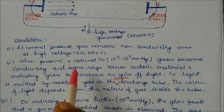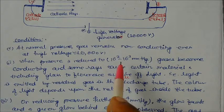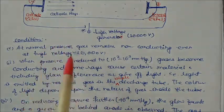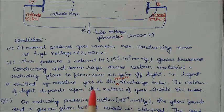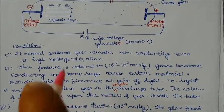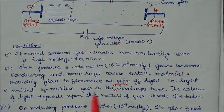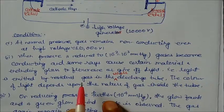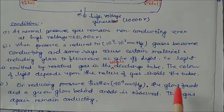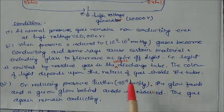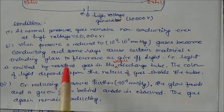Where pressure is reduced to this level, light is emitted by the residual gas present in the glass tube — called residual gas in the discharge tube. The whole discharge tube was glowing. The color of the light depends upon the nature of the gas inside the tube — whatever gas is present inside, the same type of light will be produced.